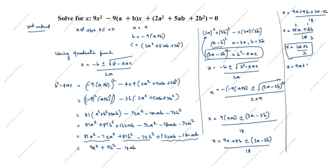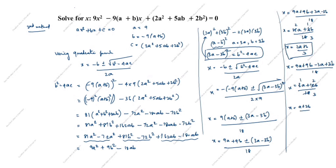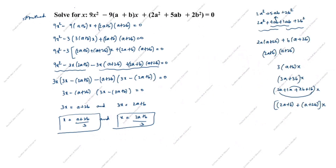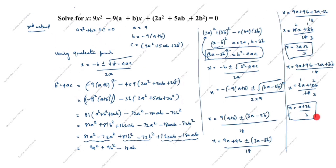Taking the minus sign: x = (9a+9b − 3a+3b) / 18 = (6a+12b) / 18. Simplifying by dividing by 6: x = (a+2b) / 3. This is the second x value. You see the first method answer and second method answer are the same. Thanks for watching this video.